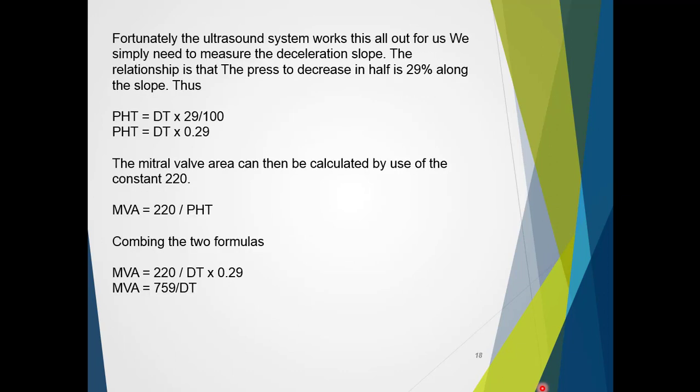Fortunately, the ultrasound system works all this out for us. All we simply need to do is measure the deceleration slope. There is also a pressure relationship that exists, that the pressure decrease half is 29% of the slope, and therefore pressure halftime is equal to deceleration slope times 29 divided by 100 to make 29%, or the pressure halftime is equal to DT times 0.29. The mitral valve area can then be calculated with the use of the constant, which is 220. So 220 divided by the pressure halftime. All we need to do then is combine the two formulas, where pressure halftime is equal to DT times 0.29, which then gives us a simple formula of 759 divided by DT.